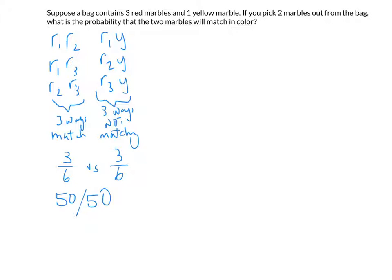To build the tree: on the first draw, three-quarters of the time you get red and one-quarter of the time you get yellow. We'll treat order as mattering, so each outcome is equally likely. The number of marbles remaining on the second draw is one less, so the probabilities change depending on what you drew first.